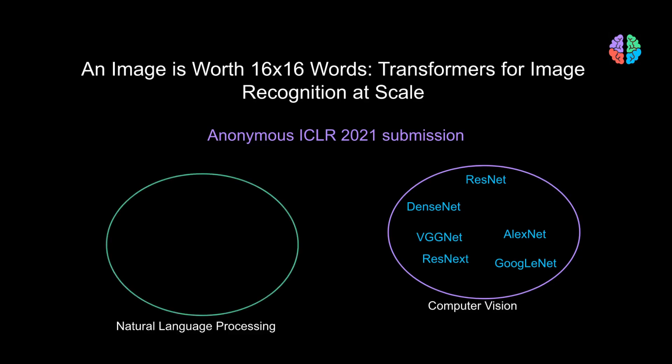On the other hand, transformers are revolutionizing natural language processing, be it translation or conversational AI. This paper answers the simple question: why not use transformers on images? We love it when two fields come together and help each other grow. In this video, let's find out how this potentially revolutionary paper uses transformers to replace convolutional neural networks.